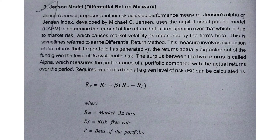The third method is the Jensen model, which is a differential return measure. The Jensen model is based on the Capital Asset Pricing Model (CAPM). The formula is: Rp = Rf + beta × (Rm minus Rf), where Rm is the market return and Rf is the risk-free rate.